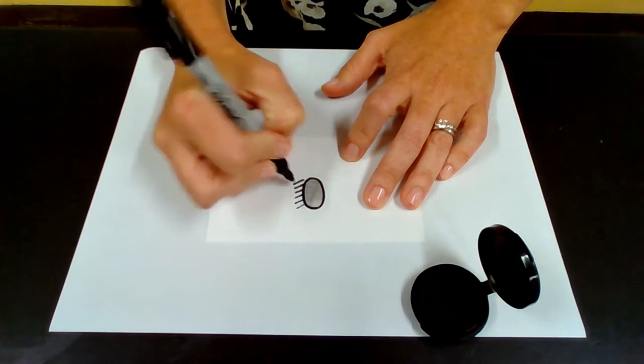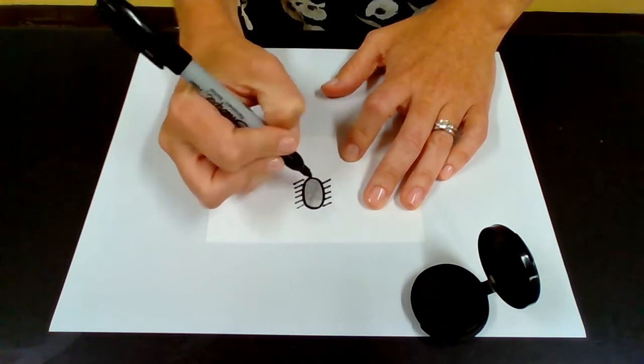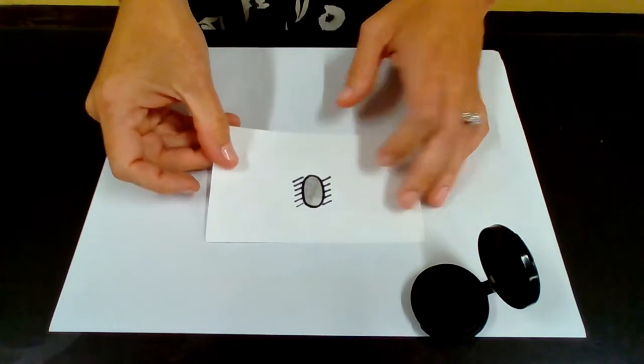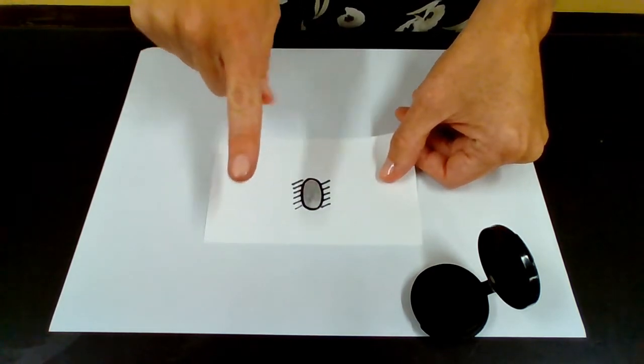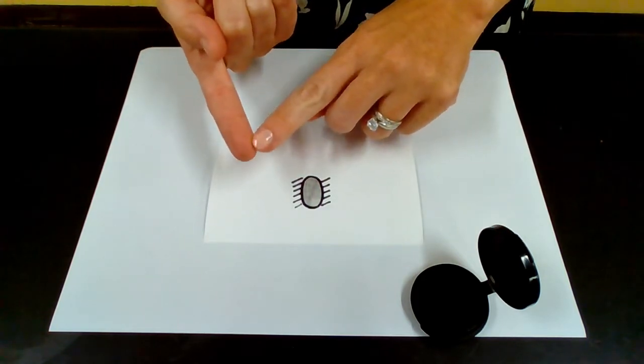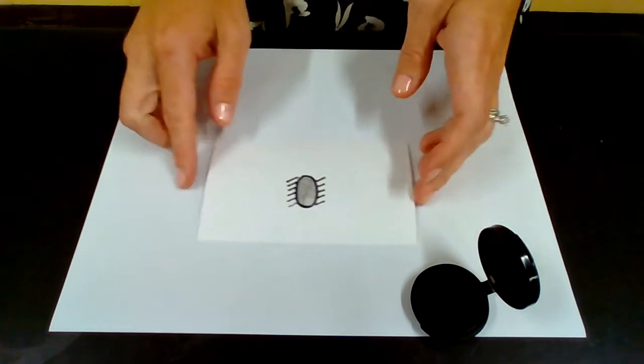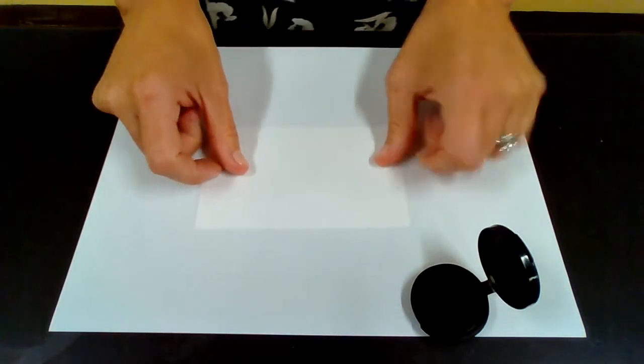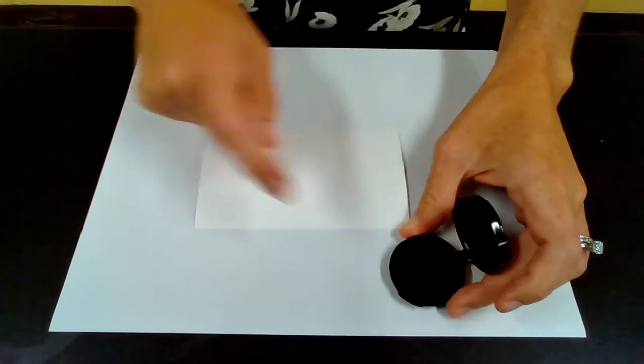So when we transfer an inked print from a fingertip, we don't want to just apply straight pressure. We want to make sure that we get the ridge details from both of the sides as well. This is why we're going to roll the fingerprint.